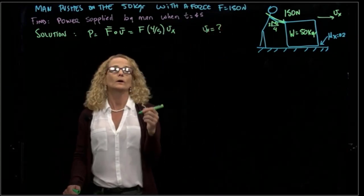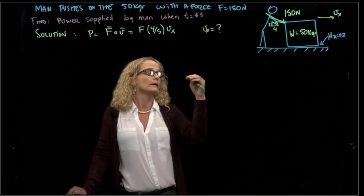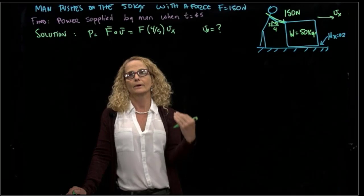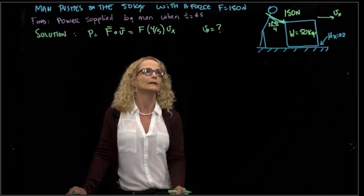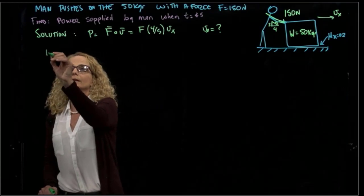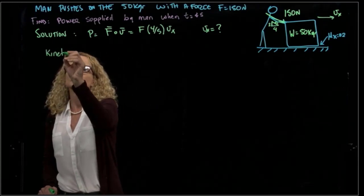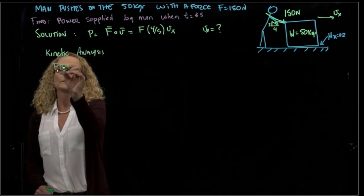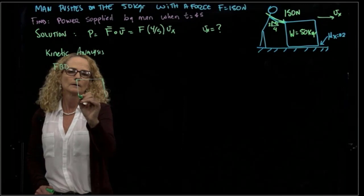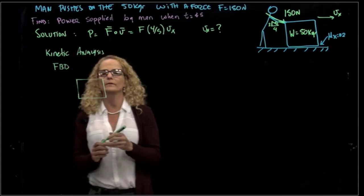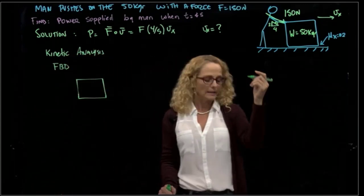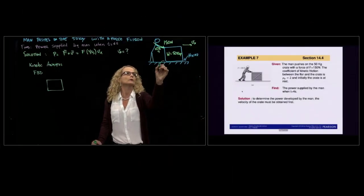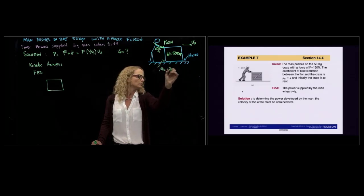How do we find the velocity in x? What we could do is find the acceleration with our kinetic analysis, and then integrate that acceleration to be able to find the velocity. For that, we do our free body diagram of the box. We do have friction. They tell us that the friction coefficient, I did not write it here, but you can read it from the PowerPoint, and the friction coefficient is 0.2.